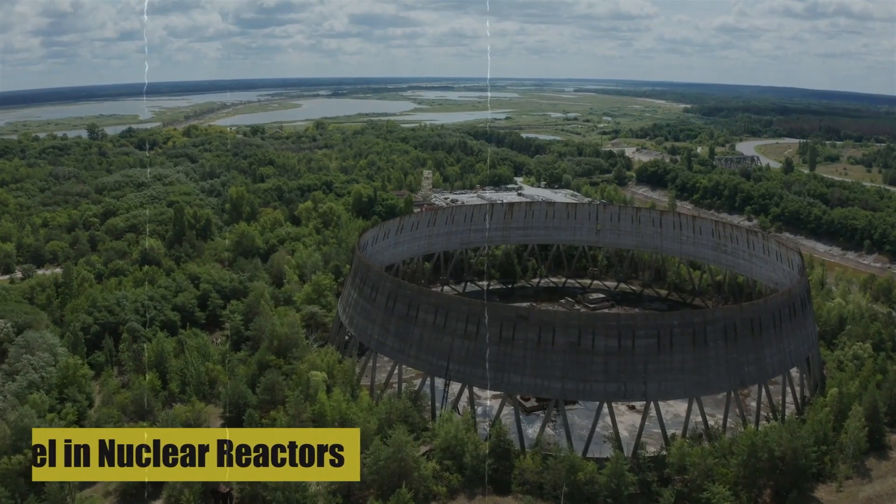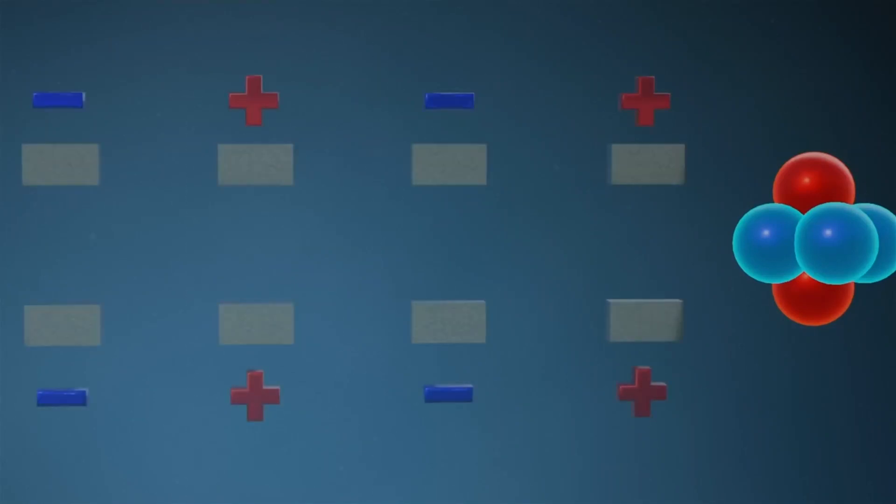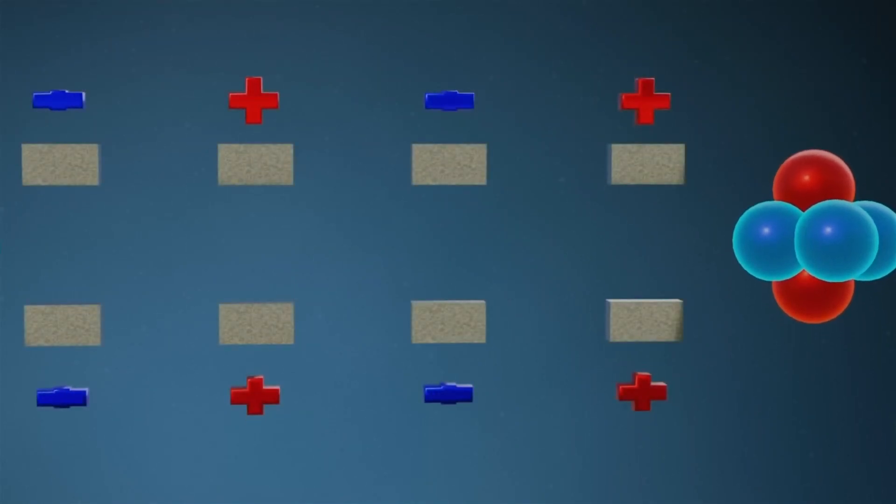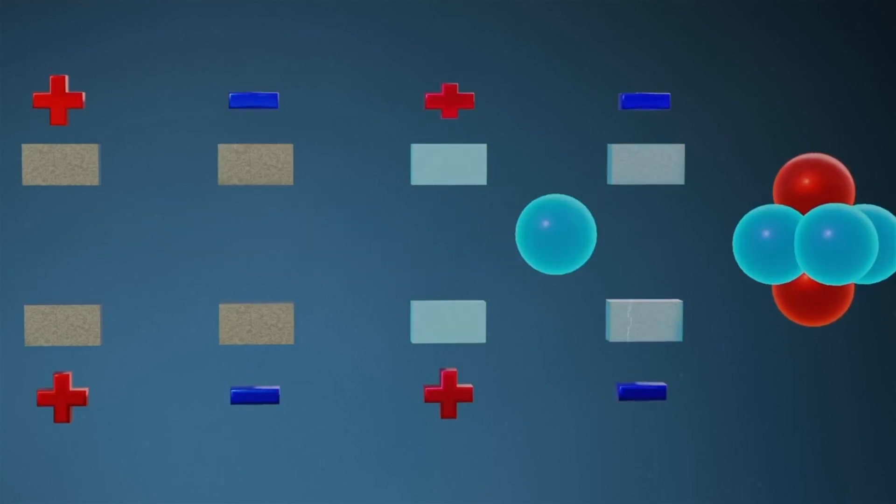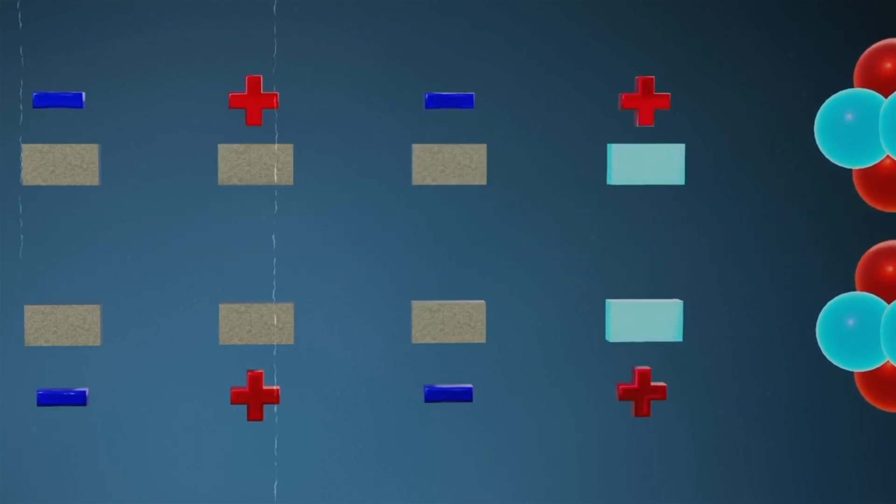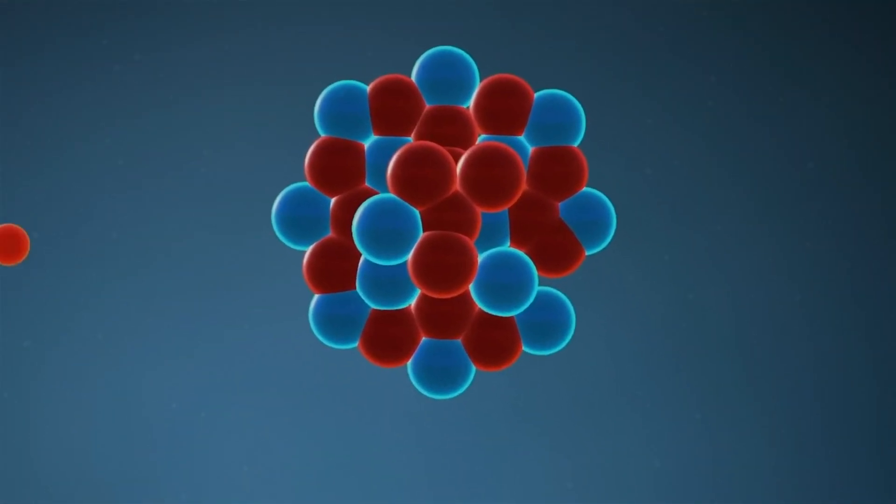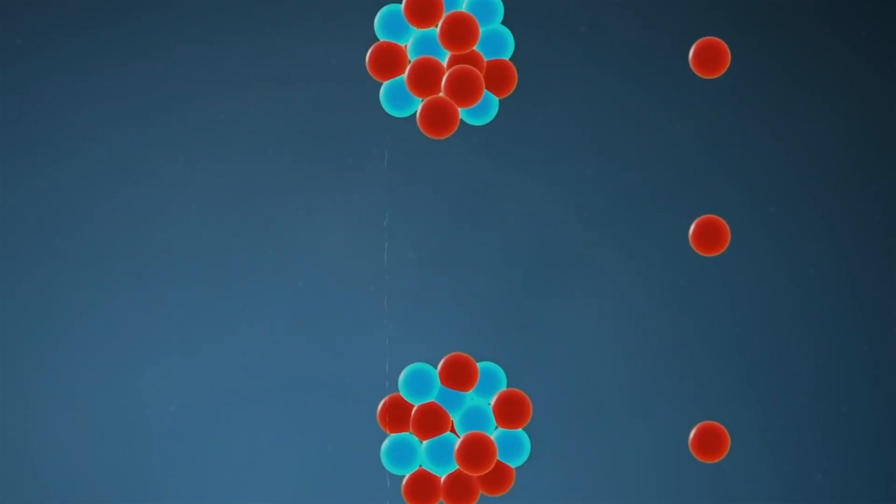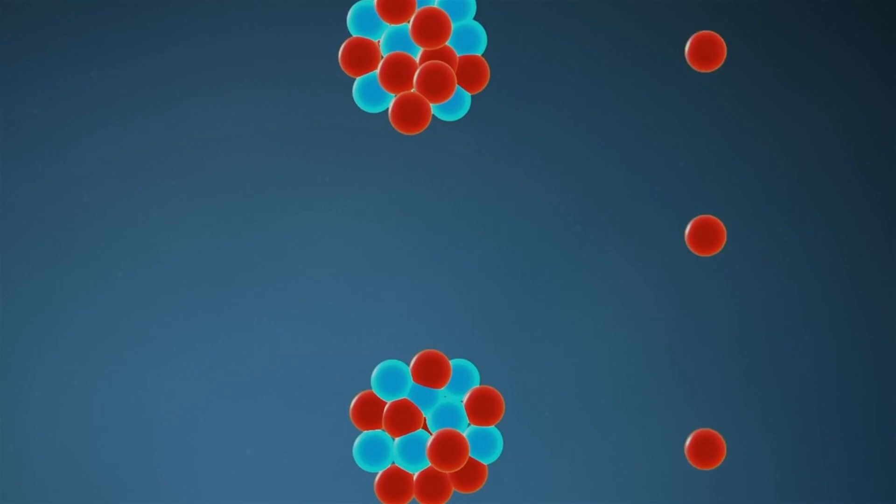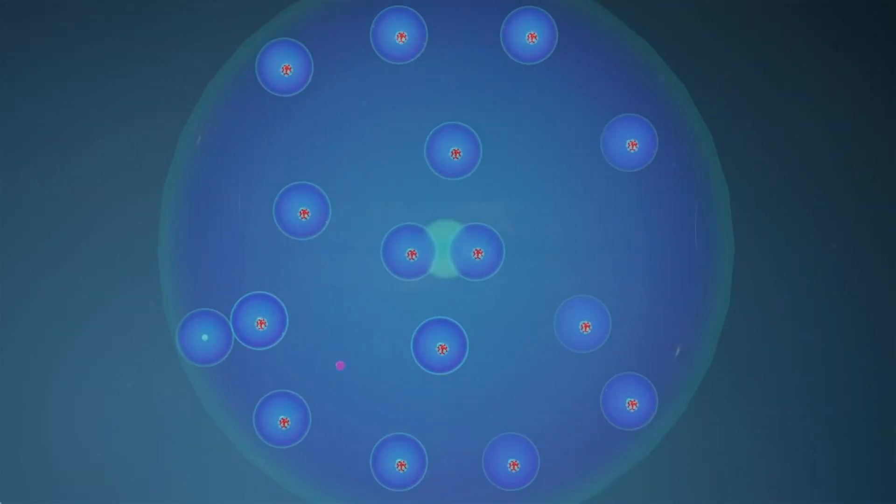Fuel in Nuclear Reactors: Neptunium itself can serve as a fuel in nuclear reactors, especially in fast neutron reactors. Fast reactors use high-energy, fast neutrons to sustain a chain reaction, and Neptunium's fissionability makes it suitable for these reactors. Its use as a fuel can help in achieving higher energy output and reducing the amount of long-lived radioactive waste generated.